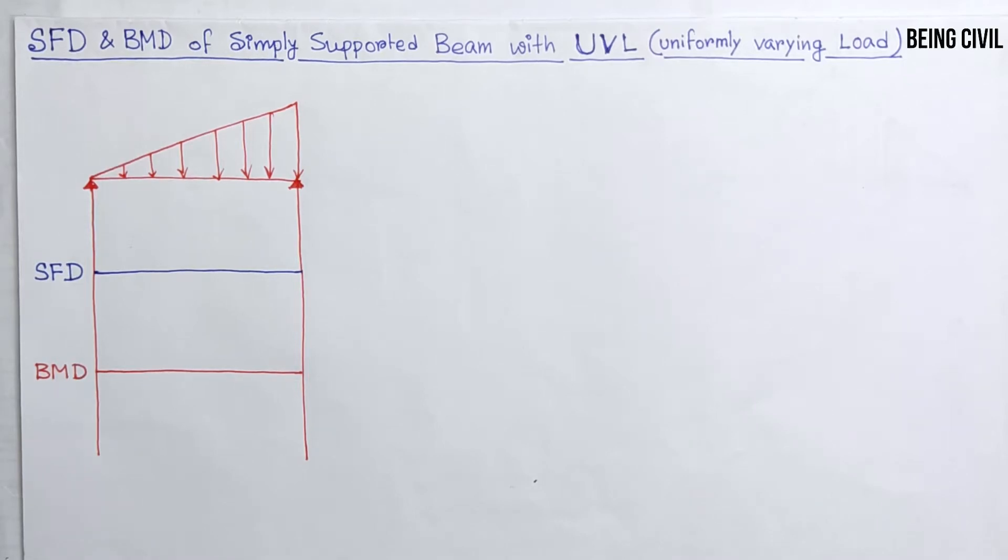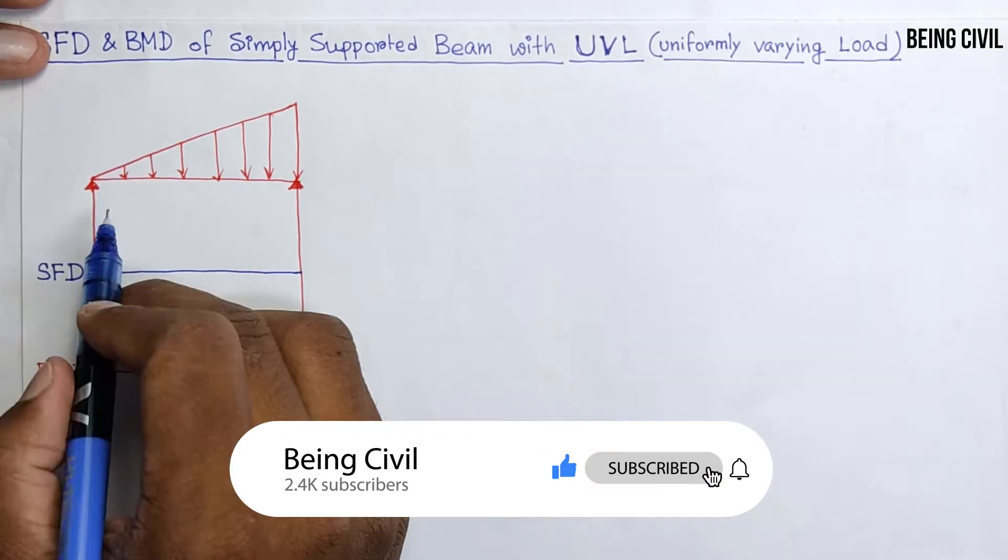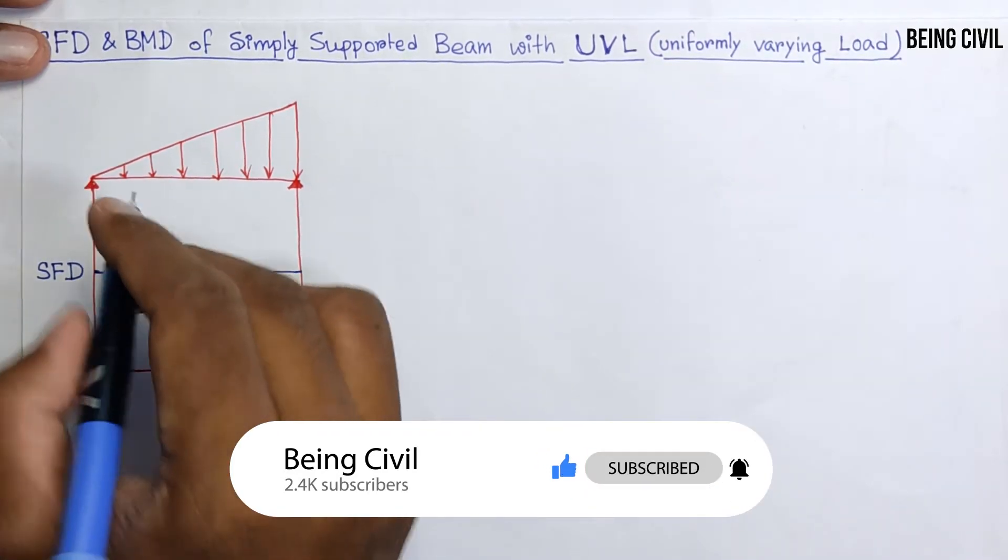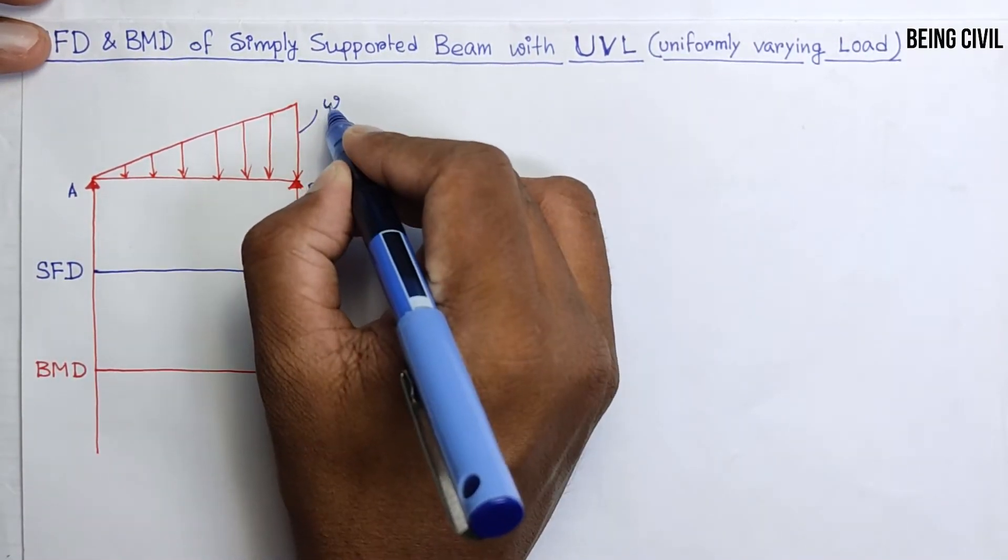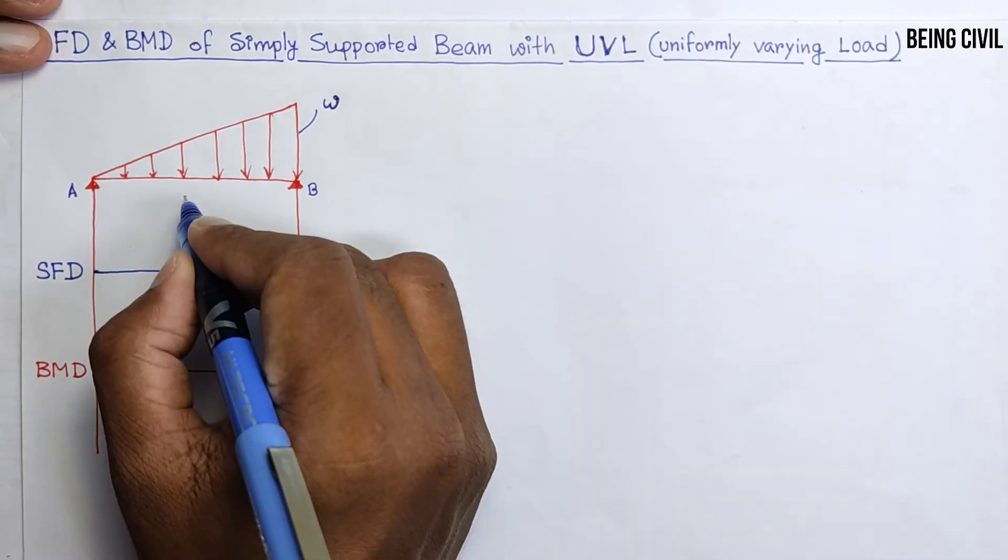Hello everybody, welcome to Being Civil. In this video we will draw the shear force and bending moment diagram of a simply supported beam with uniformly varying loading. The loading has intensity of 0 at one end A, and at another end B the intensity is W per unit length. The length of the beam is L.